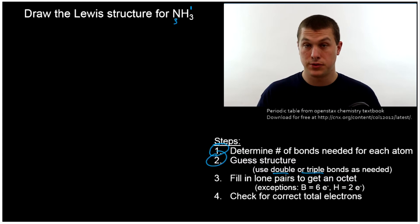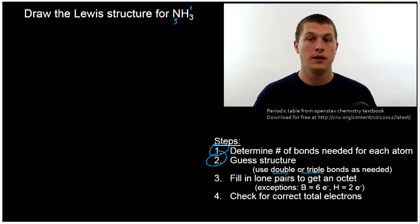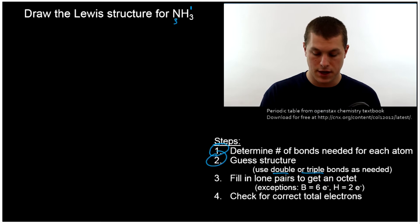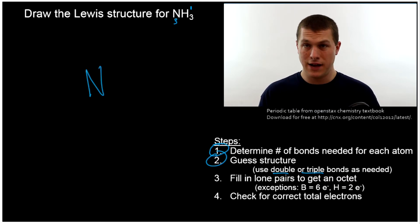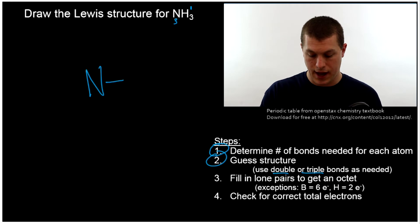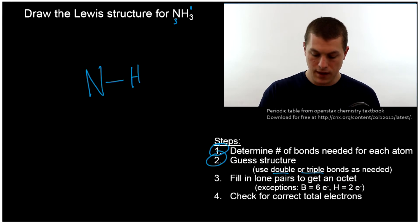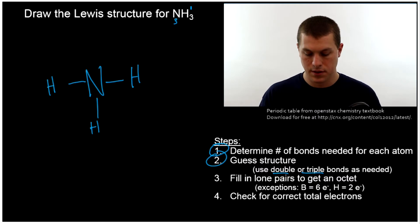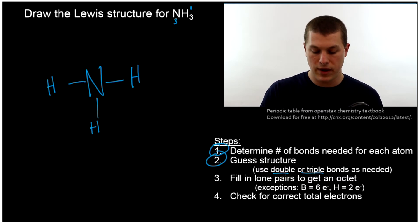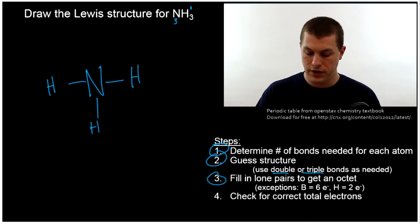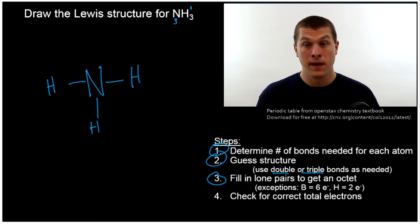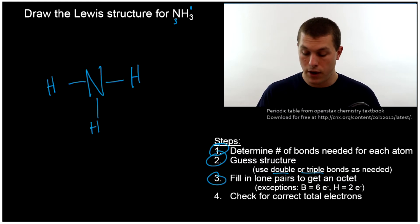Nitrogen needs three bonds, hydrogen needs one. As a good rule of thumb, put the atom that needs more bonds in the center. So we're going to put nitrogen in the center, and since each hydrogen needs one bond, we're going to connect a hydrogen here, another hydrogen, and another hydrogen. We're not done yet — we have drawn three hydrogens and one nitrogen, and they all have the right number of bonds. But we need to fill in lone pairs to get an octet. Every atom wants an octet, with some exceptions.